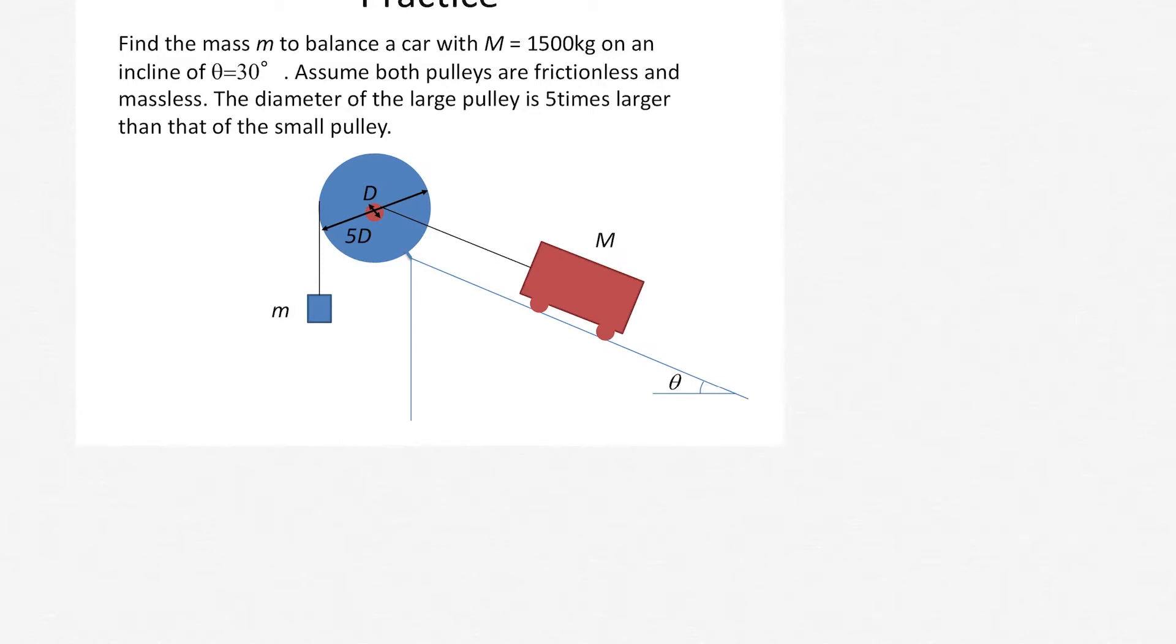In this practice, find a mass m to balance a car with a mass of 1,500 kg on an incline of theta equal to 30 degrees. Assume both pulleys are frictionless and massless. The diameter of the large pulley is 5 times larger than the diameter of the small pulley.